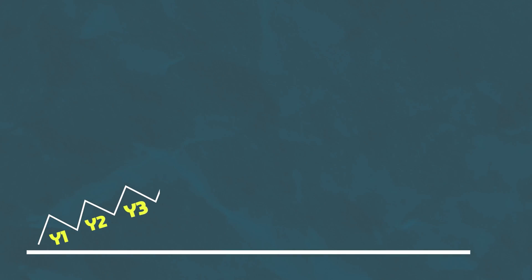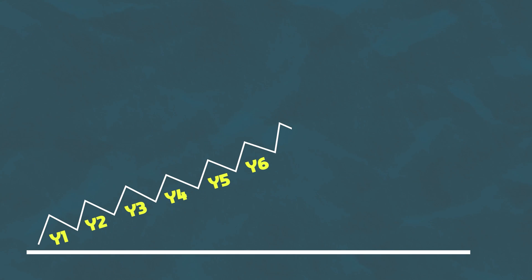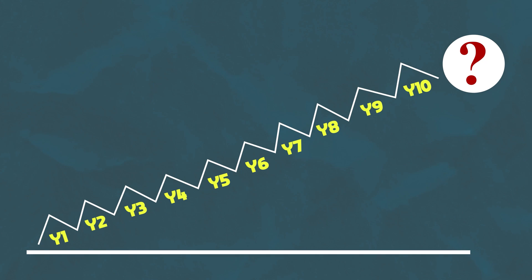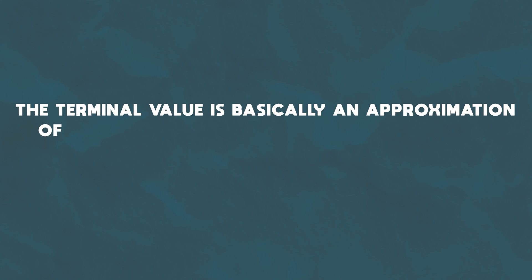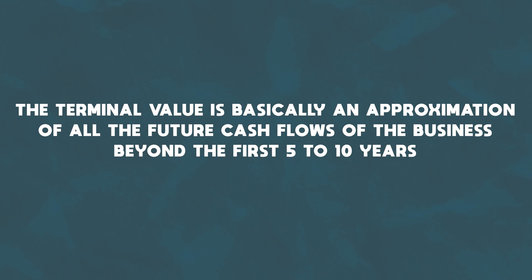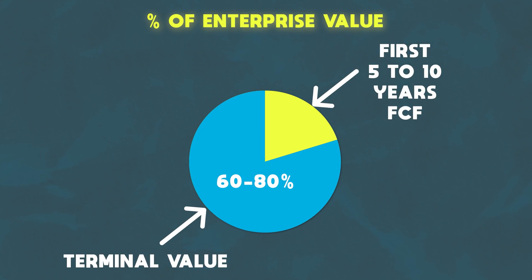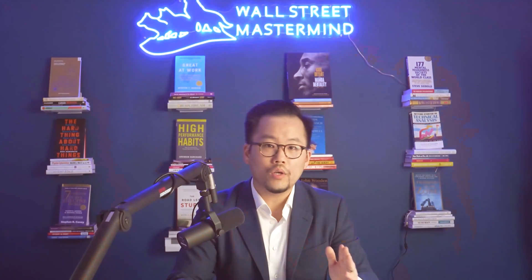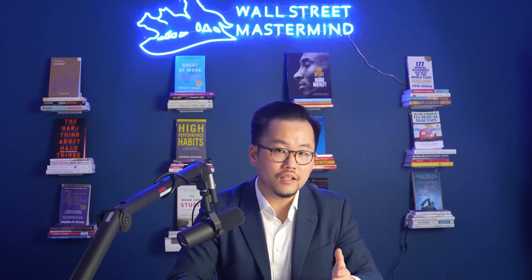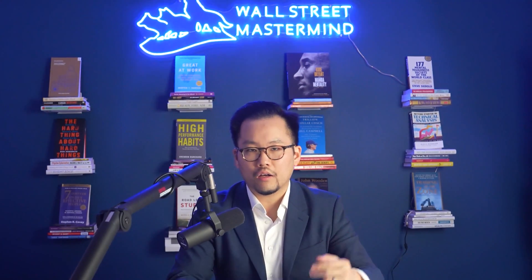You might be wondering: what about the cash flows generated by the business after those first five to ten years of your projection period? That's where the terminal value comes in. The terminal value is basically an approximation of all the future cash flows of the business beyond the first five to ten years, once it has reached steady state and become a mature business. This will usually represent 60 to 80% of the company's value. We use this approximation because it would be silly to try to forecast that far into the future with any sort of accuracy.